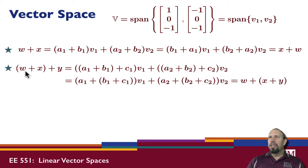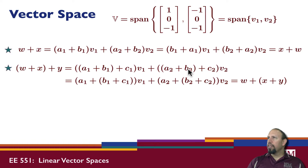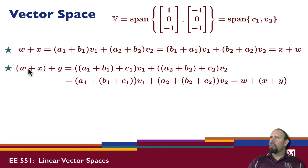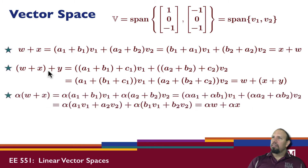For associativity: W plus X plus Y — W plus X has the form (A1+B1)V1 + (A2+B2)V2. Adding Y gives coefficients (A1+B1+C1) and (A2+B2+C2). Since addition of complex numbers is associative, I can regroup these, showing the associative property holds for these vectors.